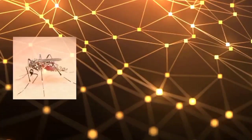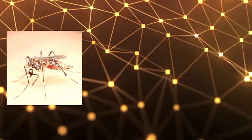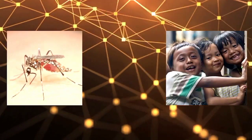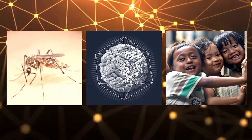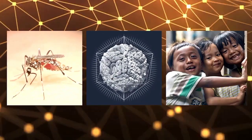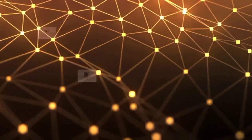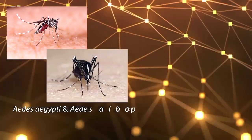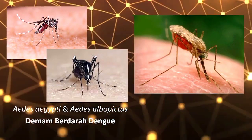Biologi vektor merupakan ilmu pengetahuan yang mempelajari serangga yang mentransmisikan patogen atau vektor, interaksinya dengan manusia atau inang, serta interaksi vektor tersebut dengan organisme penyebab penyakit yang dibawanya. Kelompok riset biologi vektor memfokuskan pada nyamuk Aedes aegypti dan Aedes albopictus sebagai vektor demam berdarah (DBD), serta Anopheles sp. sebagai vektor malaria.